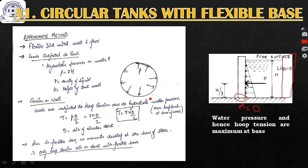The load subjected to the circular tank is the hydrostatic pressure on the walls, given by gamma times h, where h is the height of the tank wall and gamma is the density of water or any other liquid stored. The water pressure is maximum at the bottom and increases with depth, similar to the lateral earth pressure diagram studied in retaining walls.